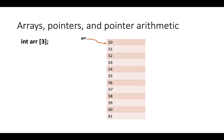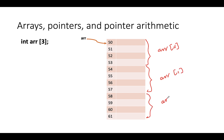This is how the allocation looks: 12 bytes total. The first 4 bytes are used for array[0], the second 4 bytes for array[1], and the third 4 bytes for array[2]. With the initialization I have, 1 is stored in the first slot, 2 in the second, and 3 in the third.